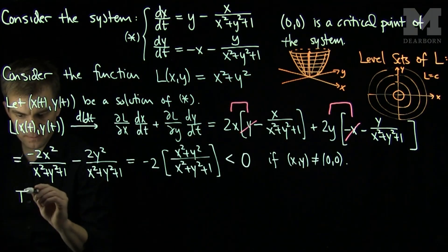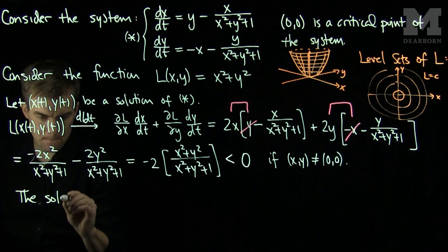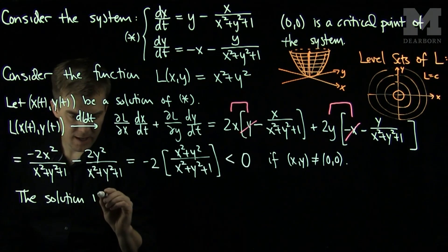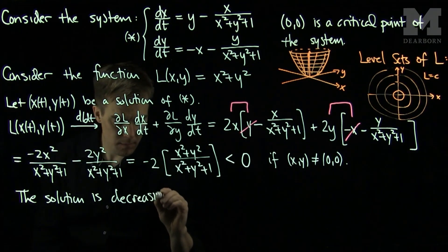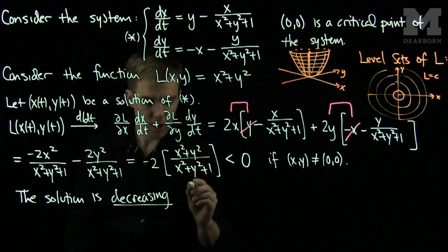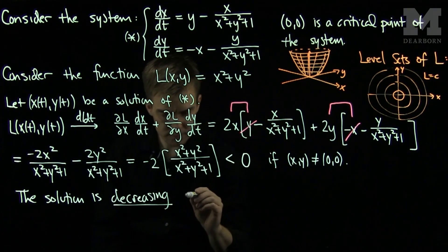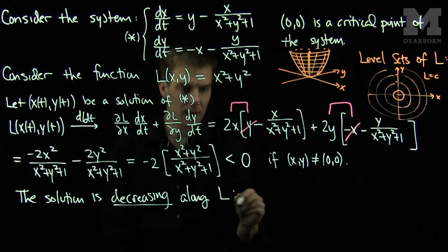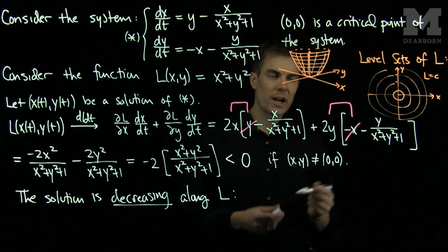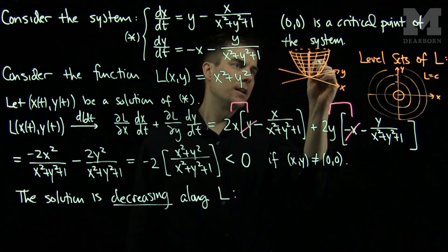What this says is it tells me that my solution is decreasing along this graph. So the solution is decreasing along L.